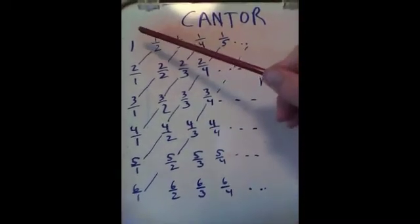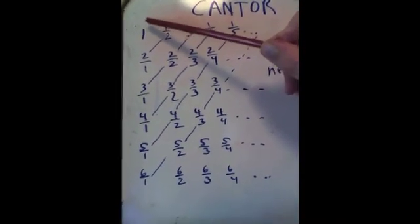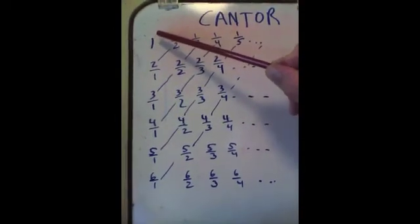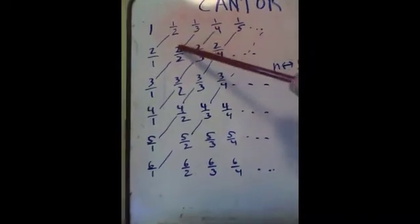What Cantor showed is that we can match each rational number with a natural number with a simple 1 to 1 correspondence. 1, 2, 3, 4, 5, 6,